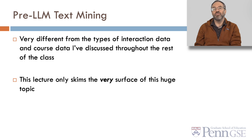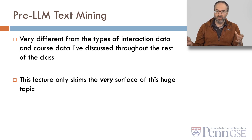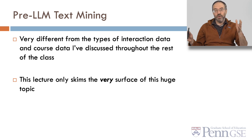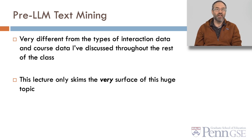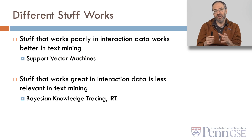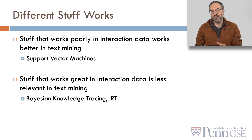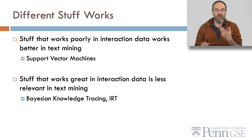Text mining in general is very different from mining the types of interaction data and course data discussed throughout the rest of this class. This lecture is only going to skim the surface of this very huge topic — entire classes have been dedicated just to pre-LLM text mining and NLP. Specifically, different stuff works: some things that work poorly in interaction data work better in text mining, like support vector machines, and some things that work great in interaction data are less relevant in text mining, like Bayesian knowledge tracing or IRT.